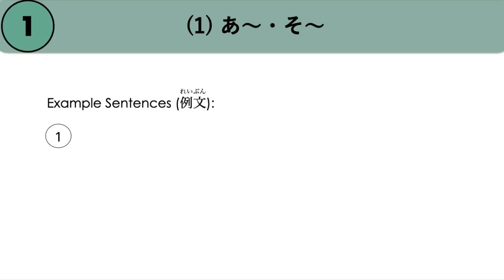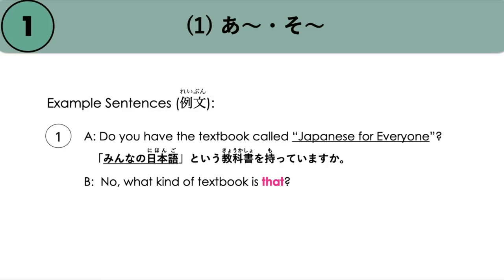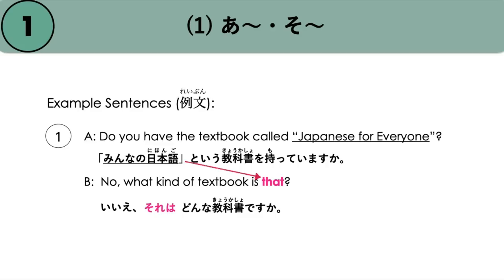Let's take a look at some examples. 'Do you have the textbook called Japanese for Everyone?' — Minna no Nihongo to iu kyokasho wo motte imasu ka? And then the other person might answer 'No, what kind of textbook is that?' Here, 'that' is a demonstrative pronoun replacing 'Minna no Nihongo'. Since the other person answered no and doesn't know the book, we use the prefix So: Iie, sore wa dou na kyokasho desu ka?